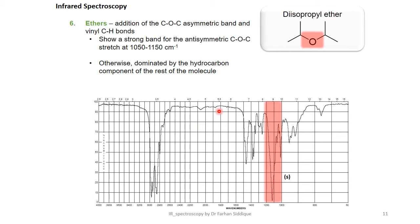Similarly we can see an addition of C-O-C asymmetric band like in ethers and vinyl C-H bonds. They show a strong bond for anti-symmetric C-O-C stretch between 1000 to 1150 cm⁻¹.